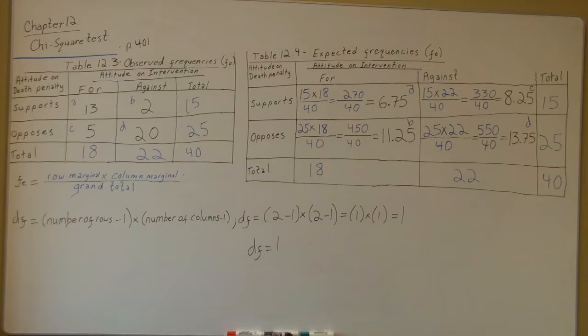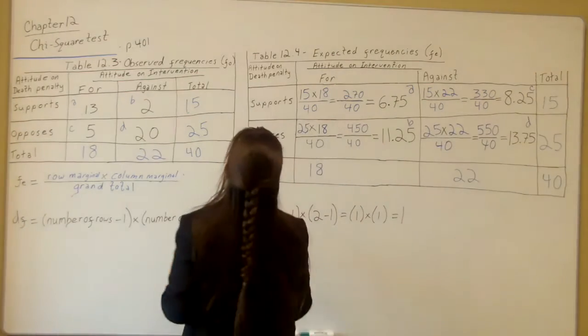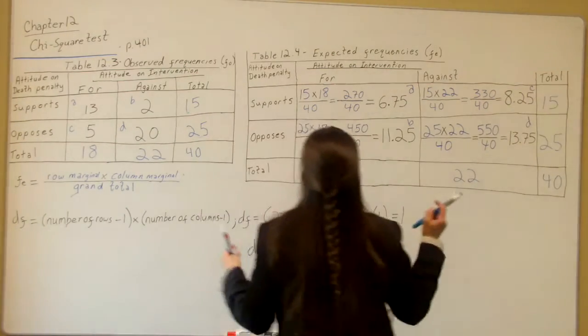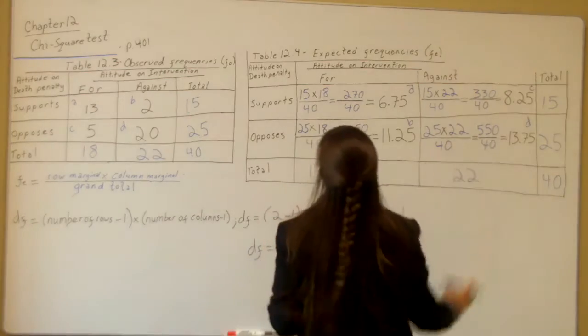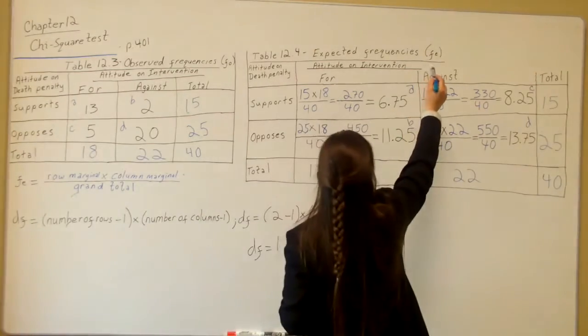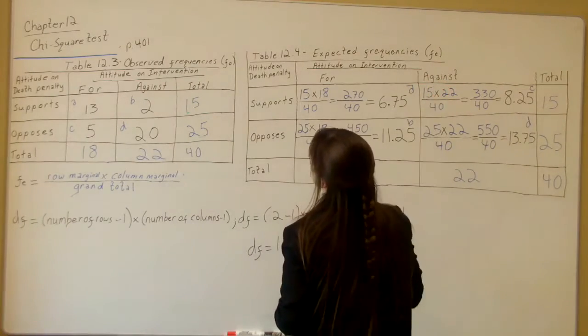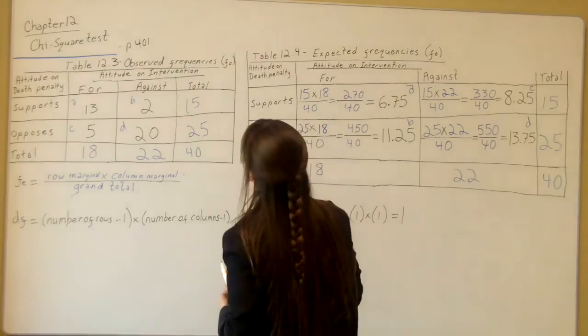Hello. This video is to help you with Cirkin Chapter 11 for the Chi-Square test. What we're first going to do is figure out how do you come up with the numbers for the expected frequencies, which is labeled italicized lowercase f subscript e, the frequencies expected or expected frequencies.